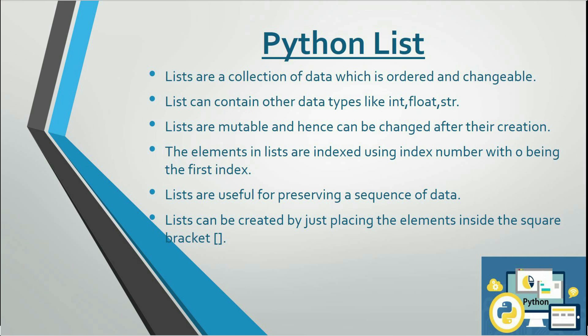This is a brief description about Python lists. Lists are a collection of data which is ordered and changeable. A list can contain other data types like integers, floats, and strings. Lists are mutable and hence can be changed after their creation. The elements in a list are indexed using index numbers, with zero being the first index. Lists are useful for preserving a sequence of data and can be created by placing elements inside square brackets.